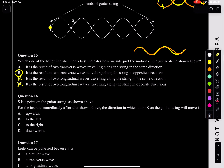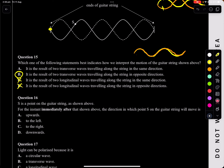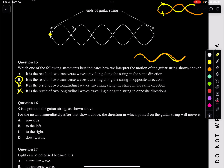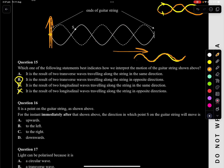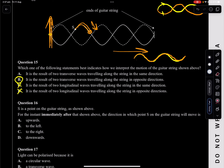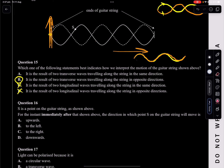Question 16: S is a point on the guitar string. For the instant immediately after that shown above, the direction in which point S will move is what? The string goes up and down, propagating to the right. In that instant, it should be going down — it goes slowly first up, but quickly goes down. So downwards should be your answer.